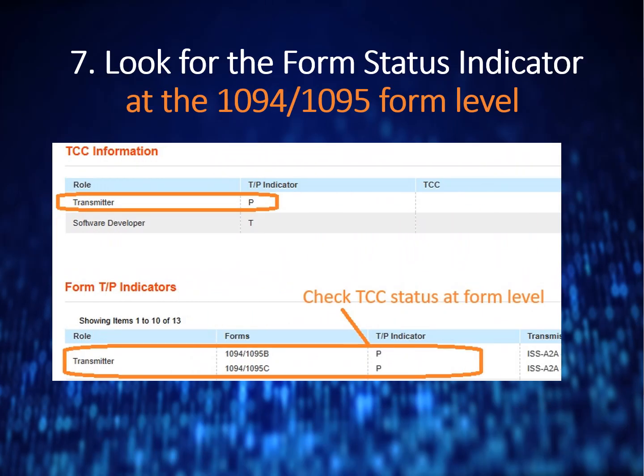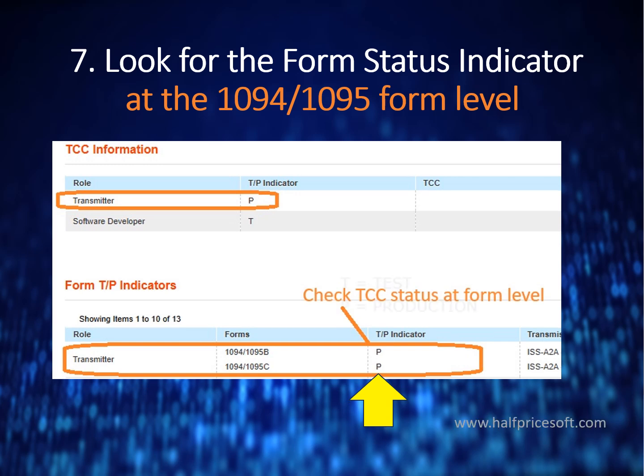You must look for the form status indicator at the 1094 and 1095 form level. T means test, and P means production. The form status indicator for a transmitter or issuer will initially be set to T (test). Once the required testing is successfully completed, it will be updated to P (production).